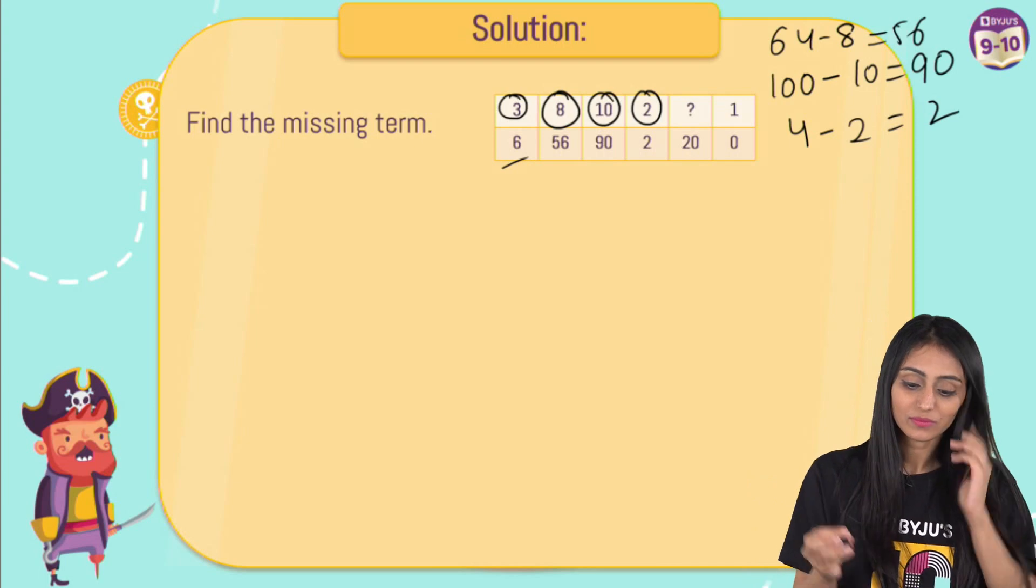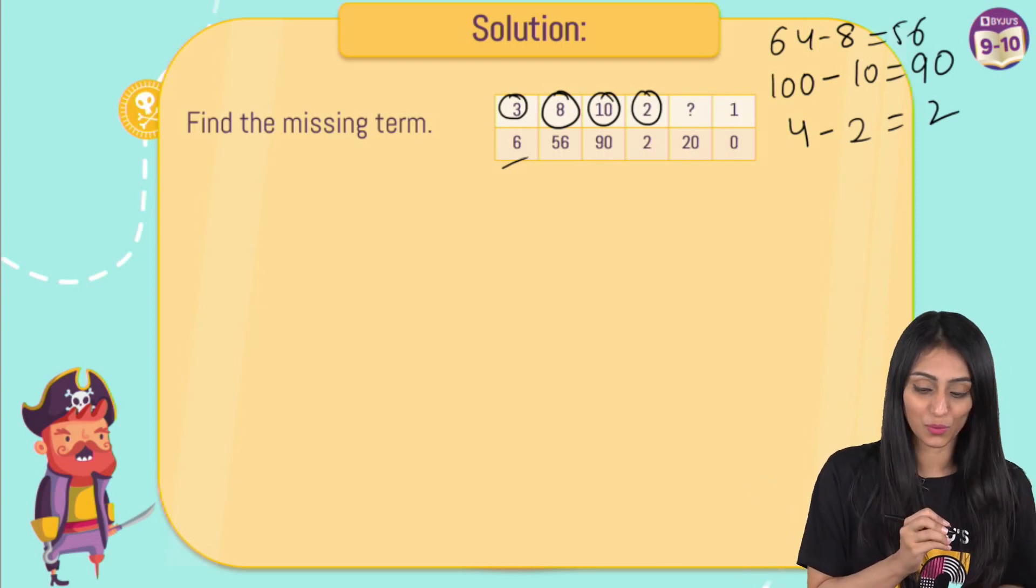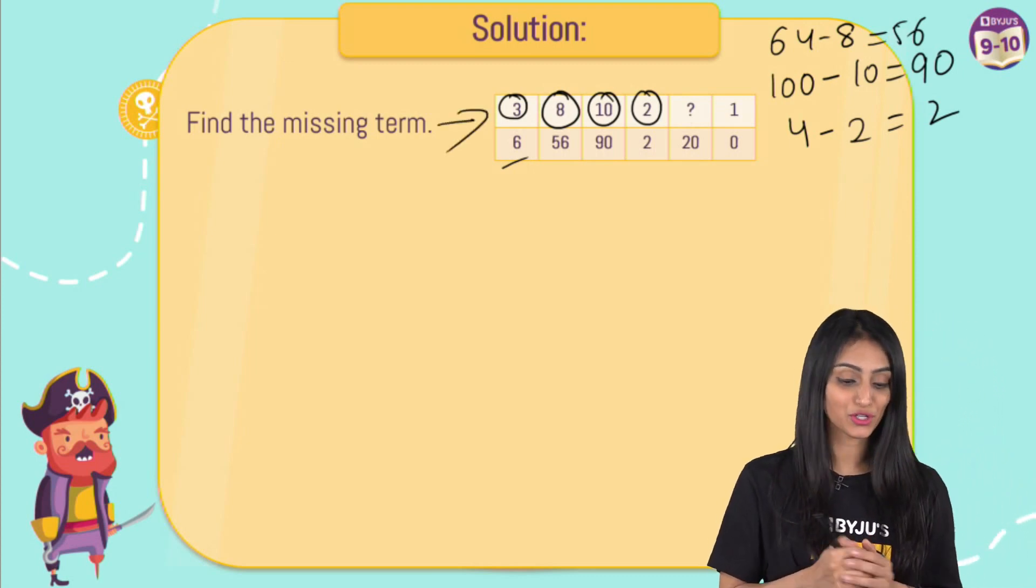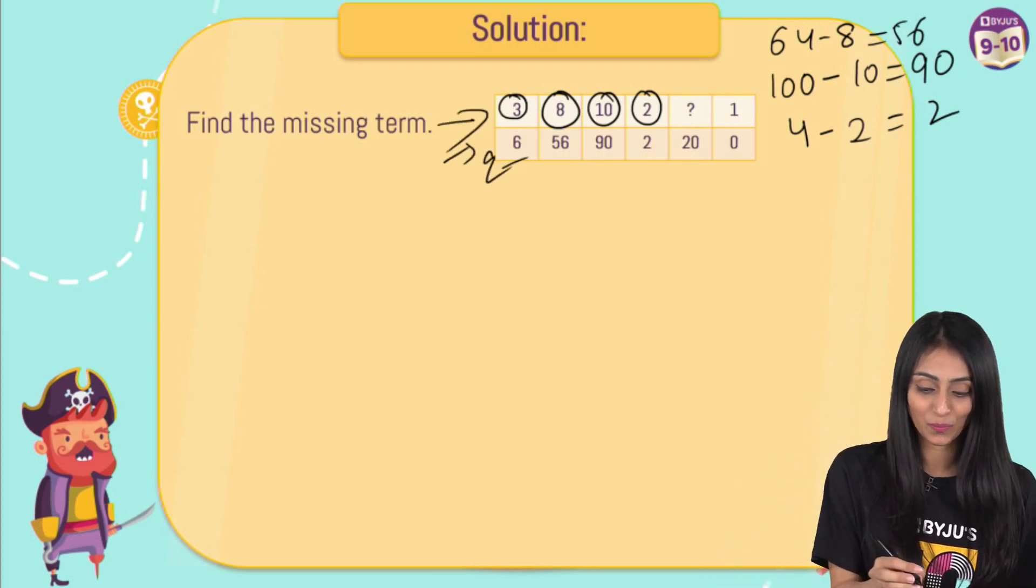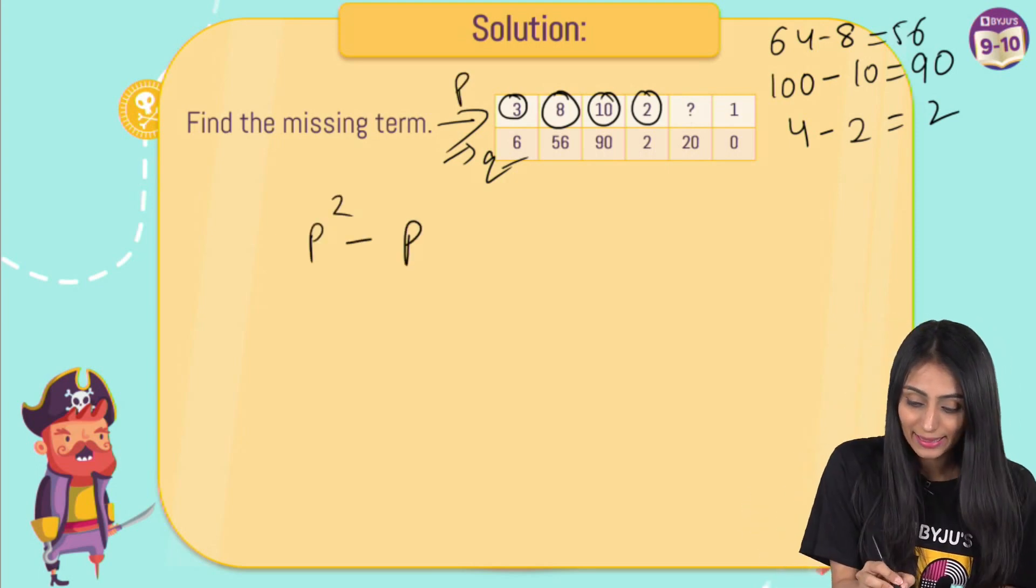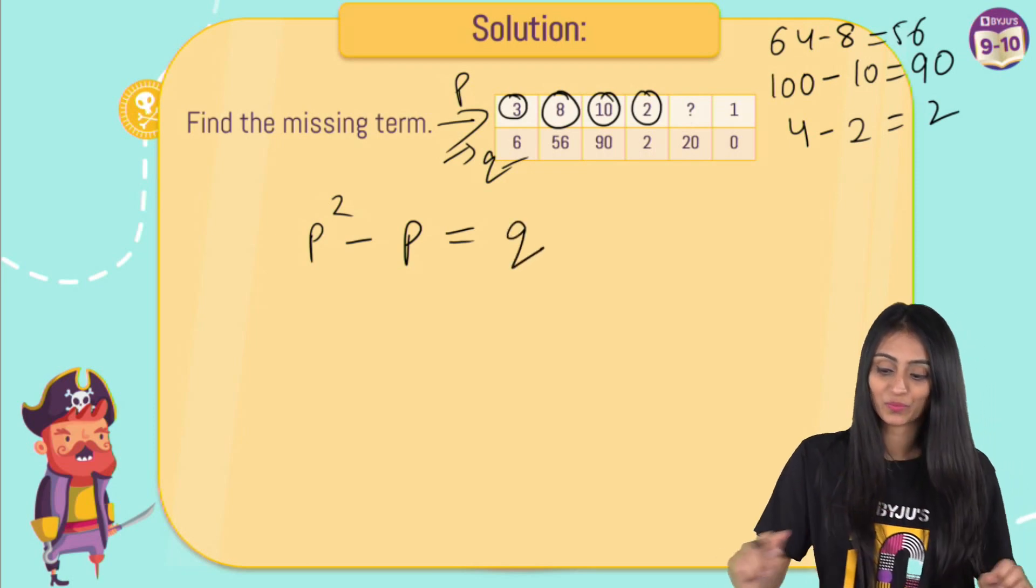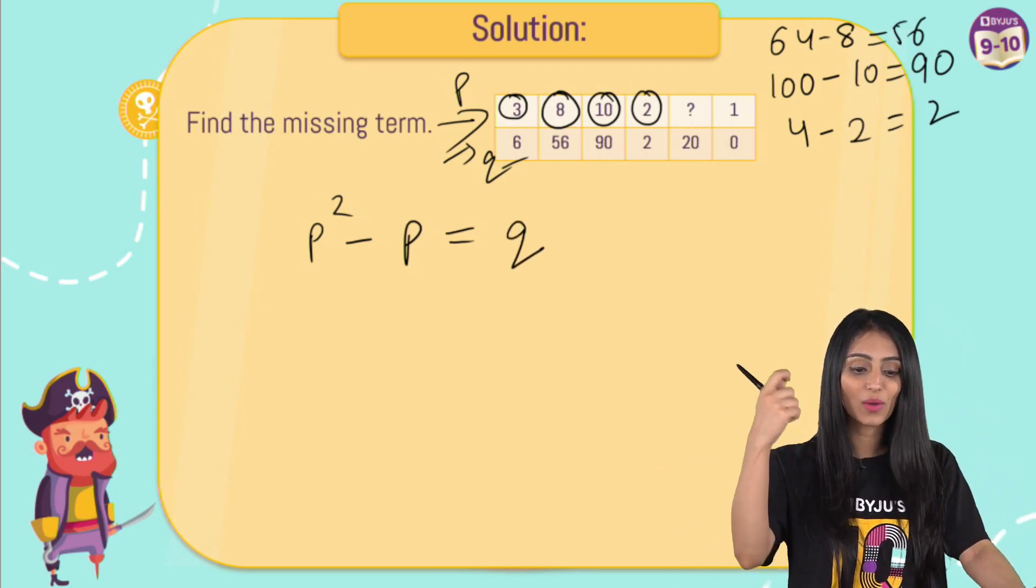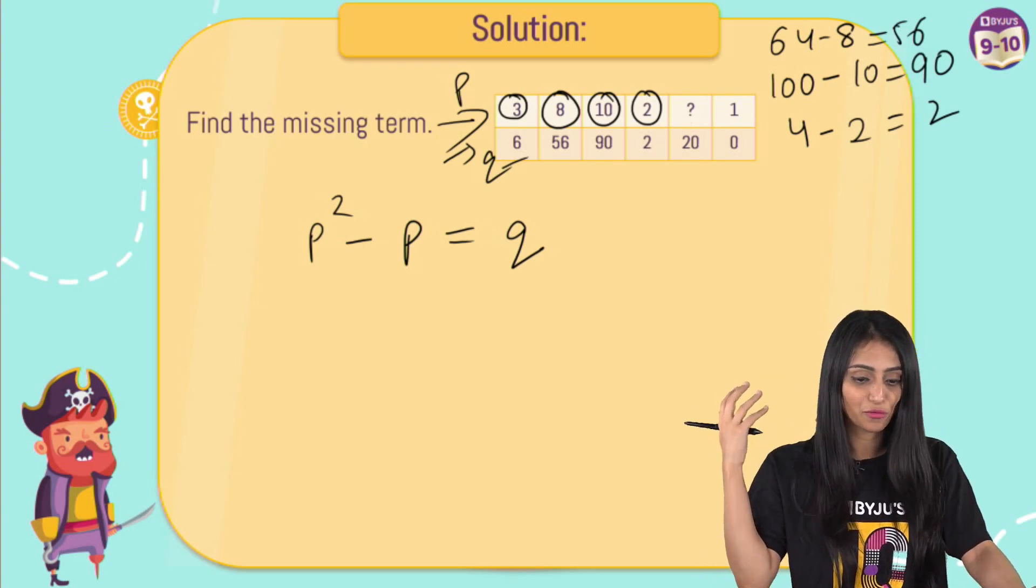So let's say, similarly for this one also, right? Let's say this one over here, let's assume the numbers. Let's say P denotes the numbers in the first row and Q denotes the numbers in the second row. So here I can say that P square minus P, this is what we are doing, right? And then we get Q. Similarly, for all of these you can see, we saw that P square minus P equals to Q, this is valid over here.